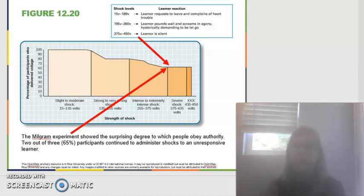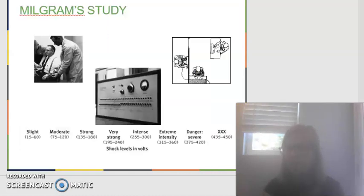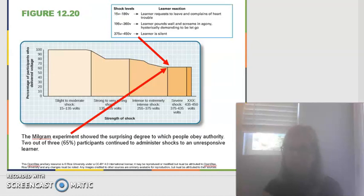You could see in his original study, 65% of the participants went all the way to the severe shock, the severe shock, the learner is silent. And it's a really intense shock. And so they just wanted to know how can these Americans be doing this.